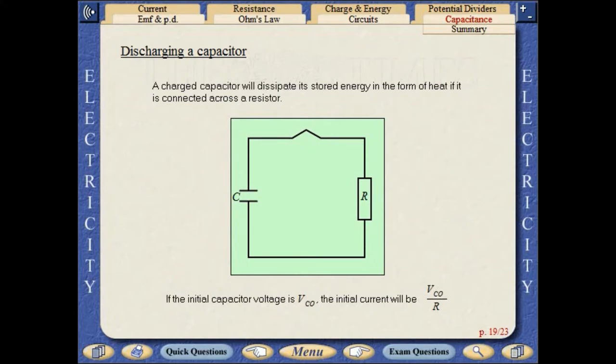A charged capacitor will dissipate its stored energy in the form of heat if it is connected across a resistor. If the initial capacitor voltage is VC0, the initial current will be VC0 over R.